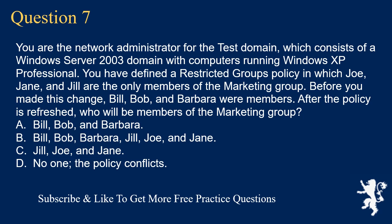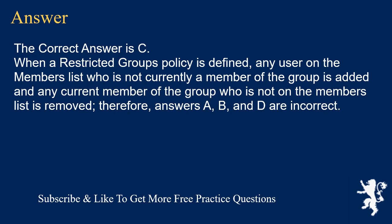A. Bill, Bob, and Barbara. B. Bill, Bob, Barbara, Jill, Joe, and Jane. C. Jill, Joe, and Jane. D. No one — the policy conflicts. The correct answer is C. When a restricted group's policy is defined, any user on the members list who is not currently a member of the group is added, and any current member of the group who is not on the members list is removed. Therefore, answers A, B, and D are incorrect.